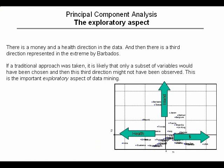When we look at the data, we can see that we have a health direction and a money direction — names we could attach to the India direction and the USA direction. But we also have a third direction, which in this case we can call an island direction, because we see that small islands are mainly in that direction. Even though this may not be the best example, this does show us how we can do exploratory analysis and learn something from the data.